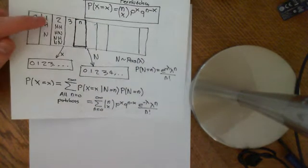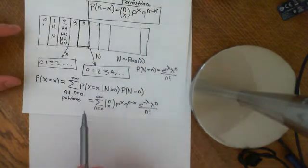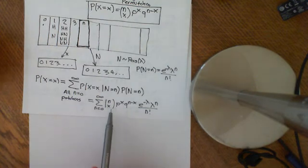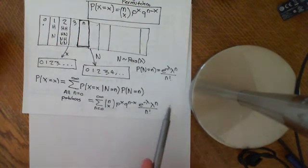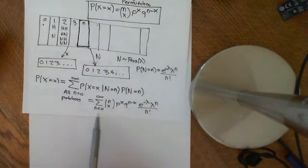Welcome back to this video. In this video we are looking at a really beautiful problem involving joint probability distributions. In the previous video, we worked out what the probability mass function for a certain number of eggs, x, hatching is, and it's given by this.